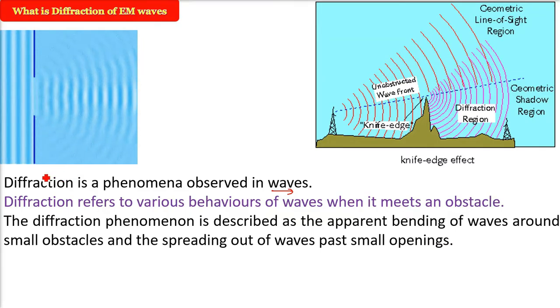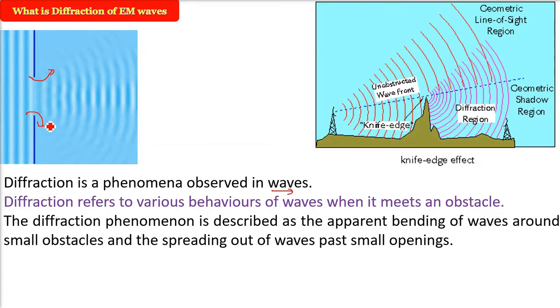So the diffraction phenomenon can be described as the apparent bending of waves around these small obstacles and then these waves spread out. Because of these small openings these waves spread out, that is called as diffraction.